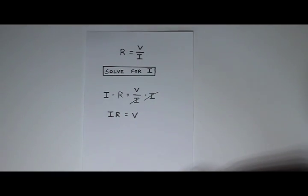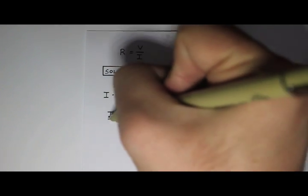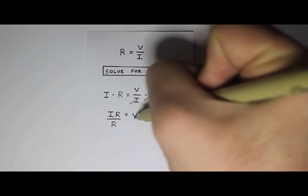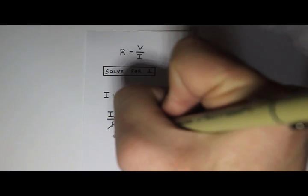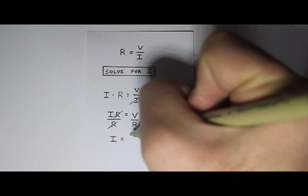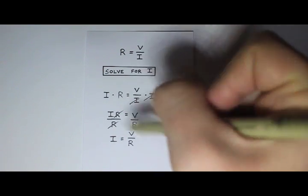And I'm left with i R equals V. I'm almost there, I just got to get i by itself, and in order to get i by itself I better divide both sides by R. So divide by R, divide by R. Again, the R's cancel. I'm trying to cancel stuff out so I can get i by itself, and I get i equals V divided by R.